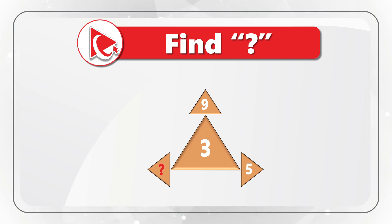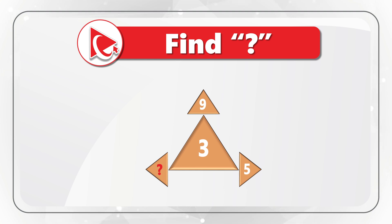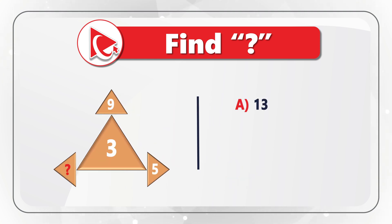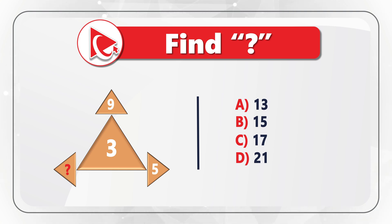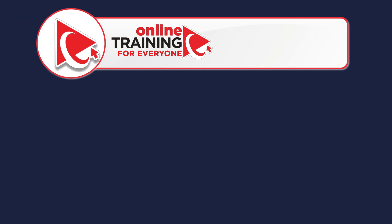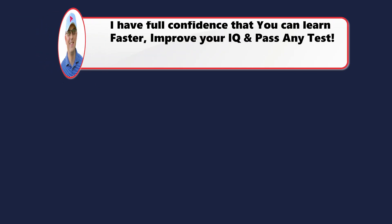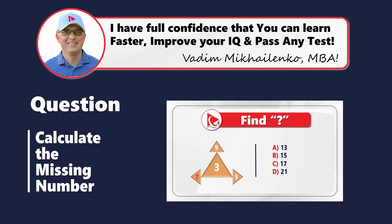Select the correct answer out of four possible choices: choice A is 13, choice B is 15, choice C is 17, and choice D is 21. Take a close look to see if you can complete the calculations and make the right choice. Did you figure it out? I'm moving forward to share my version of the answer.